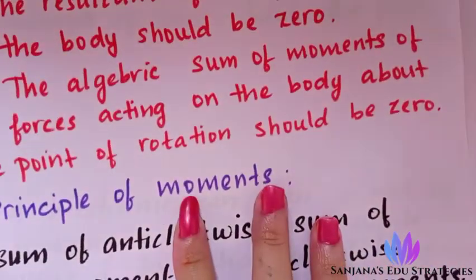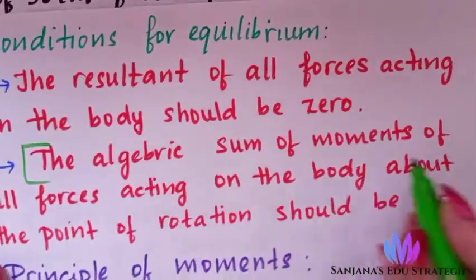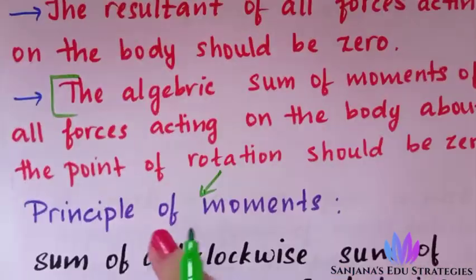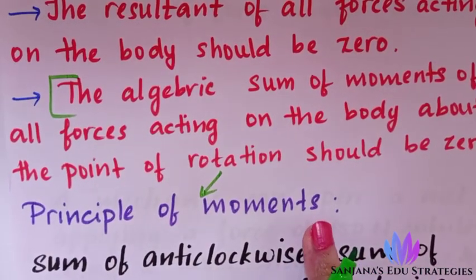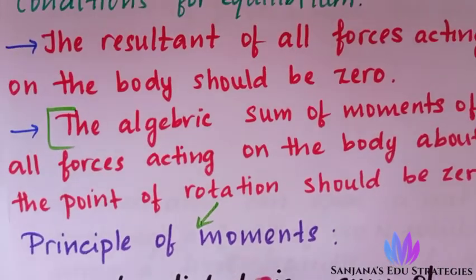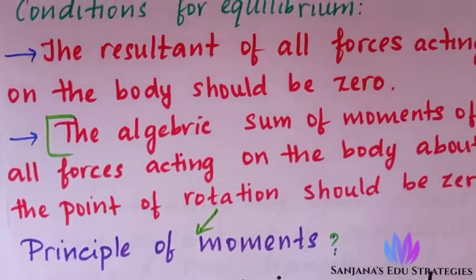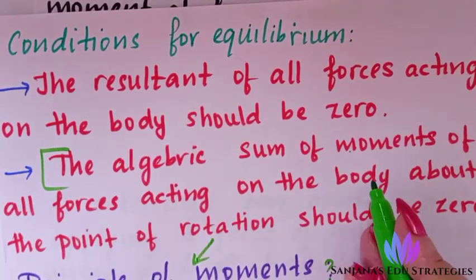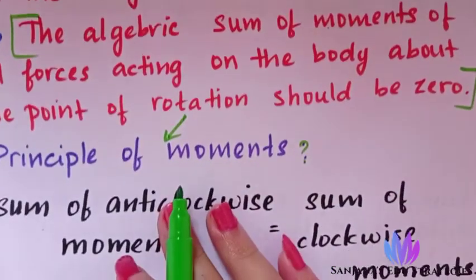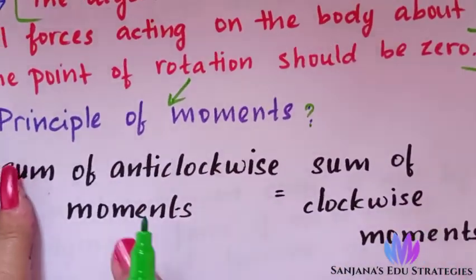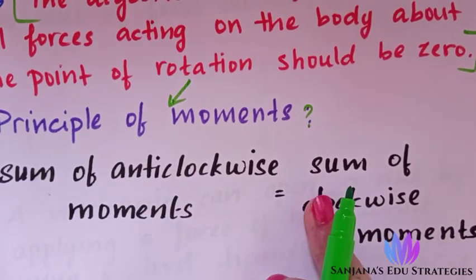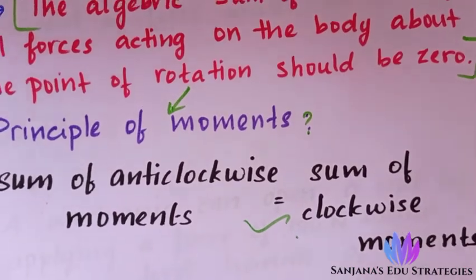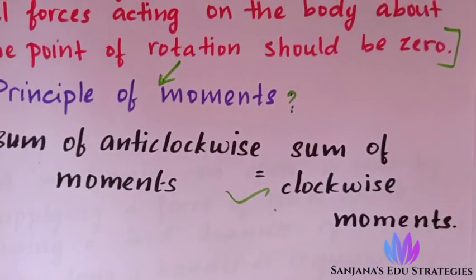The second condition of equilibrium is called the principle of moments. According to the principle of moments, the algebraic sum of moments of all forces acting on the body about the point of rotation should be zero. In other words, the sum of anticlockwise moments should be equal to the sum of clockwise moments — that is the principle of moments.